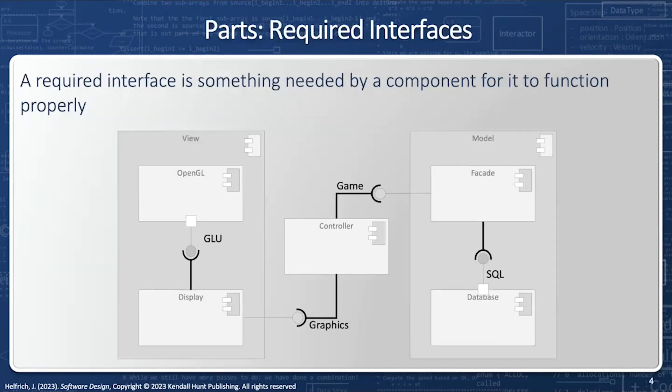A required interface is something that is needed by a component for it to function. So in this case, the controller requires a view, the controller requires a model, and the facade requires a database, and the display requires an OpenGL. In most cases, we name the interface that we require. Required is always an open half circle, which means 'I need something.' This means the controller cannot function without the model, and the controller cannot function without the view.